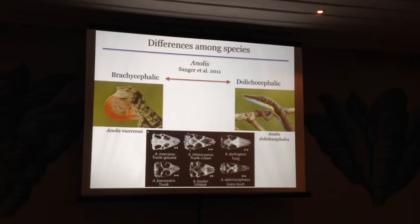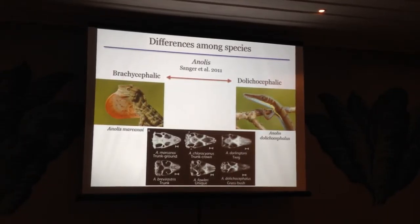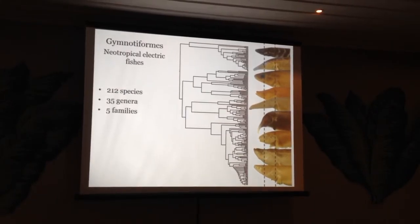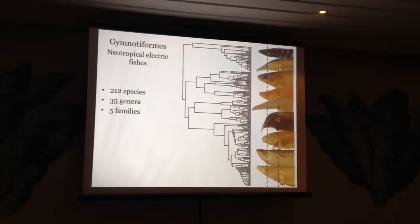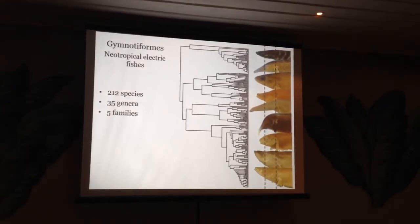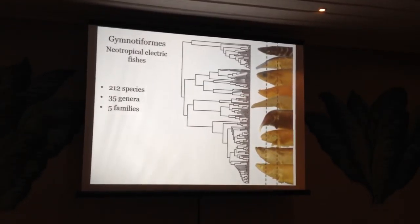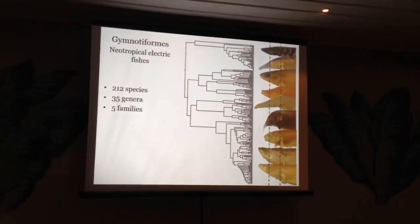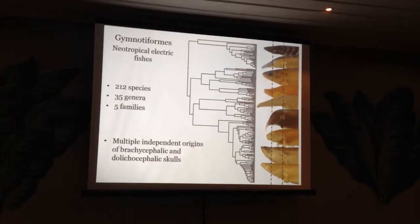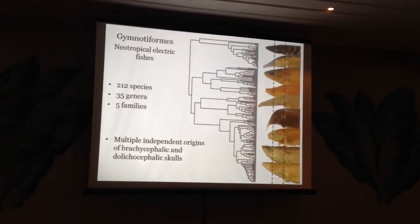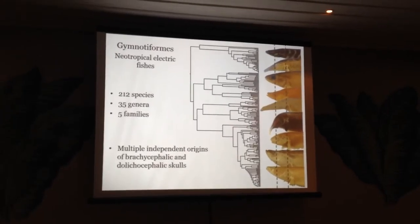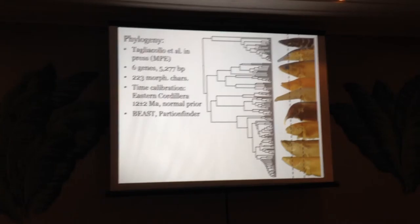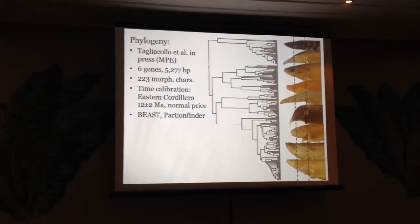The study group for this talk are gymnotiform electric fishes. There are about 212 species currently described, allocated to 35 genera and 5 families. In this group, there have been multiple independent origins of elongate and excessively foreshortened skulls compared to what we think is the ancestral condition. This particular phylogeny is the result of Victor Tagliacollo's thesis.